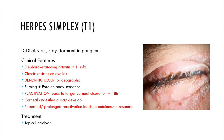Reactivation leads to larger corneal ulceration and can include the iris as well. Corneal anaesthesia may develop, which is lack of sensation on the cornea, and prolonged or repeated reactivation of the herpes simplex virus can rarely lead to an autoimmune response. Herpes simplex can be differentiated from herpes zoster by sensory nerve distribution — in herpes simplex multiple sensory nerves are affected, whereas in herpes zoster only one sensory nerve is affected. There are also no dendritic ulcers in herpes zoster. Treatment is by topical acyclovir, an antiviral.